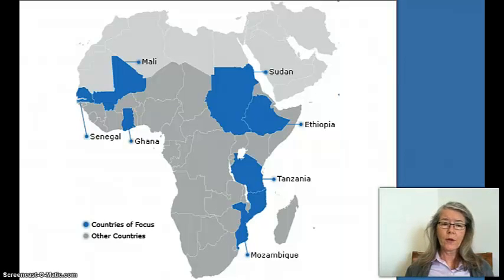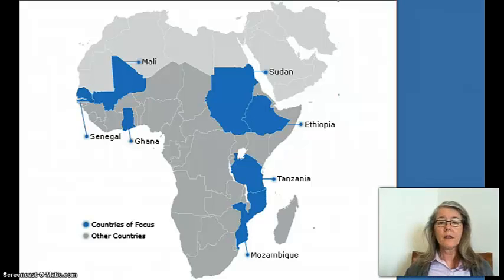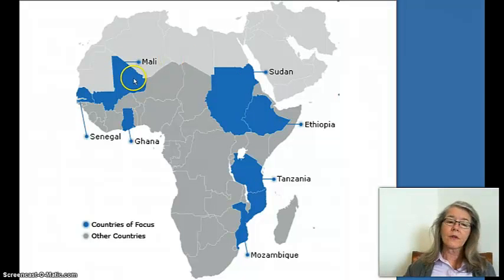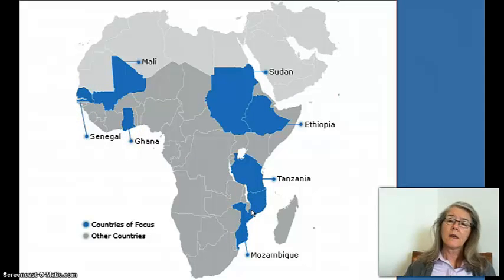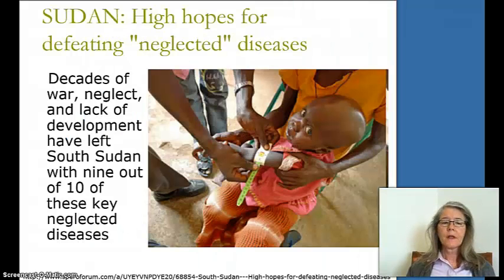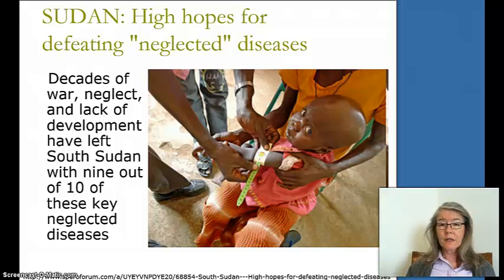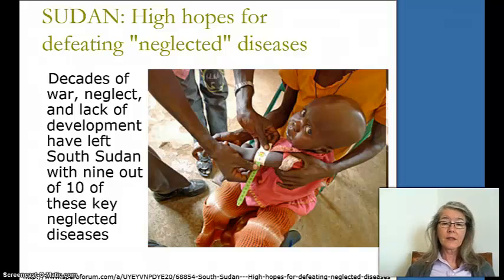Looking at the Afro-WHO area — sub-Saharan Africa in particular — these are the focus countries with particularly difficult challenges related to neglected tropical diseases: Sudan, Ethiopia, Mali, with a drier environment, and Senegal, Ghana, Tanzania, and Mozambique. These are very low-resource locations with huge levels of poverty. Sudan has high hopes of defeating these neglected tropical diseases, but decades of war, civil strife, and lack of development have left South Sudan, Sudan, and Darfur with 9 out of 10 identified neglected tropical diseases — things that primary health care workers must constantly screen for.